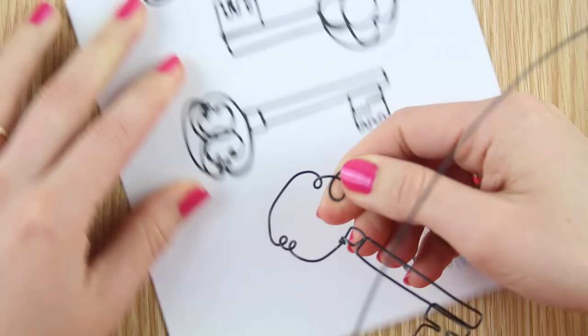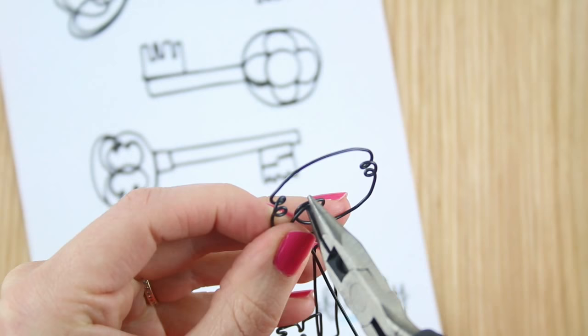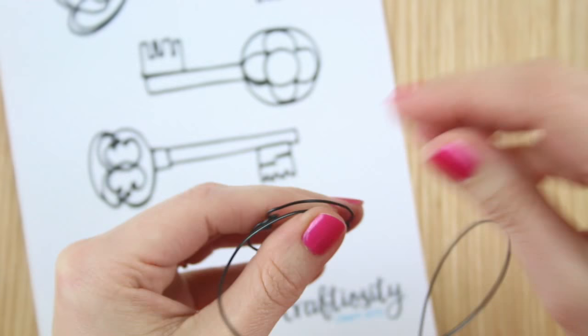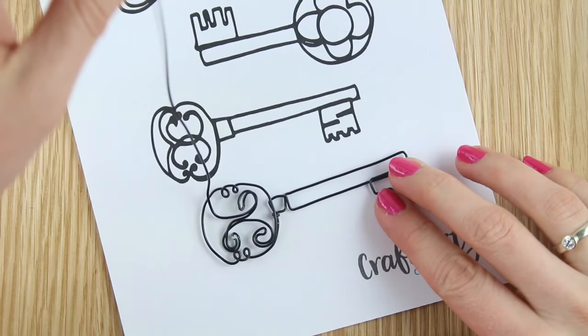And as you did with the hooked teeth of the previous key, use the pliers to squeeze the wire together and then tighten the scroll. Take the wire up to do the top of the scroll in the same way. Then guide the wire back down the outside of your first scroll to do the bottom of the opposite scroll. Do this in the same way and guide the wire back up to do the top of the scroll.